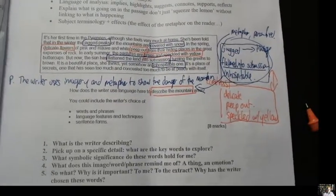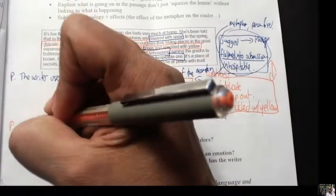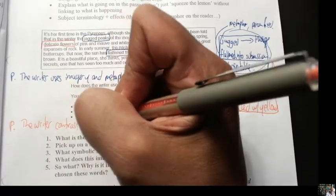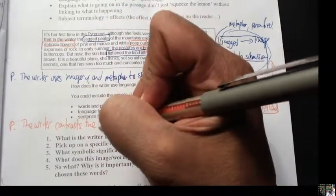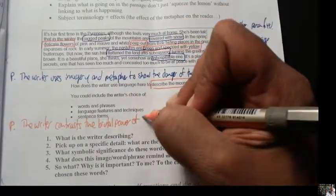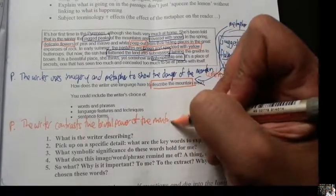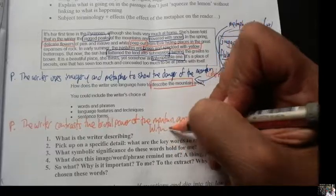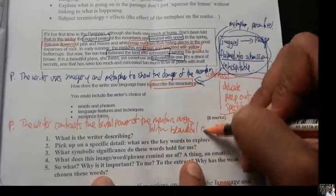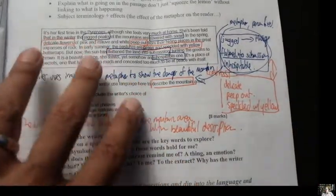This is then contrasted with the second topic sentence, which might be something like this. The writer contrasts the brutal power of the mountains, mountain area, with beauty. Full description. Okay, so those are your points.